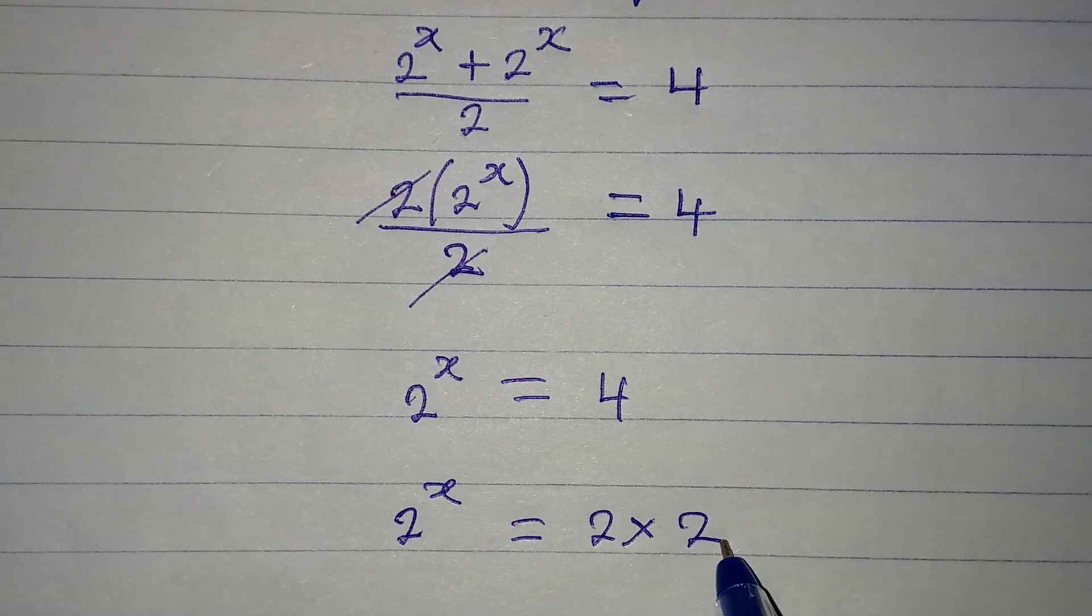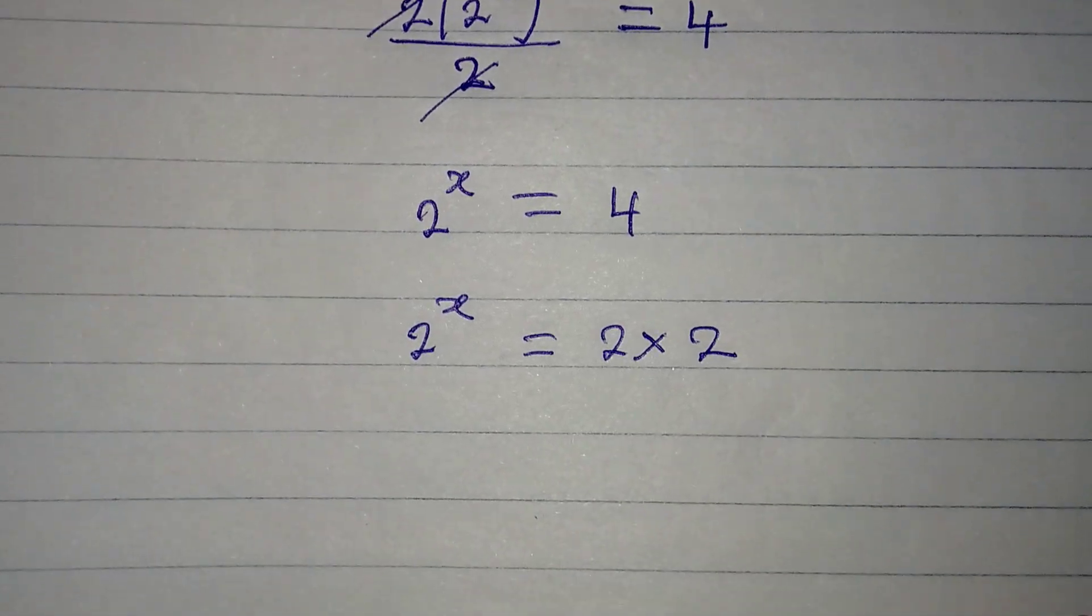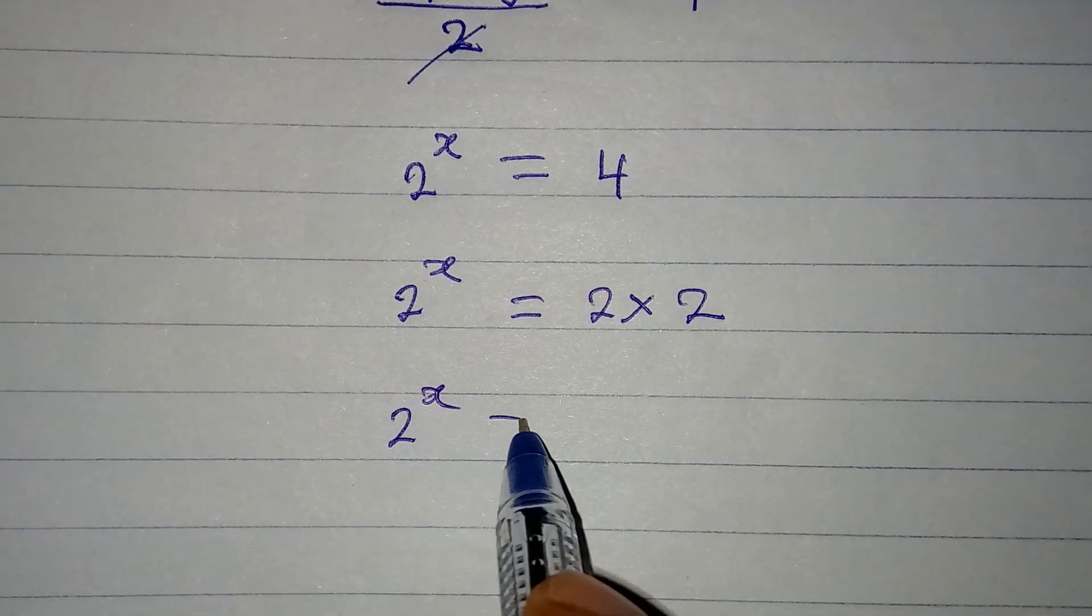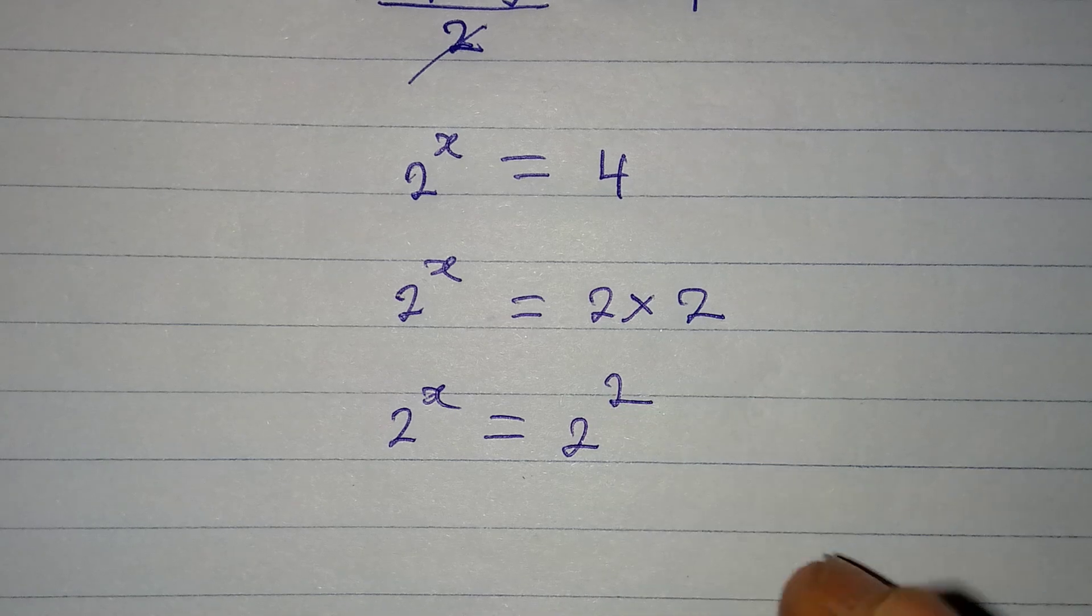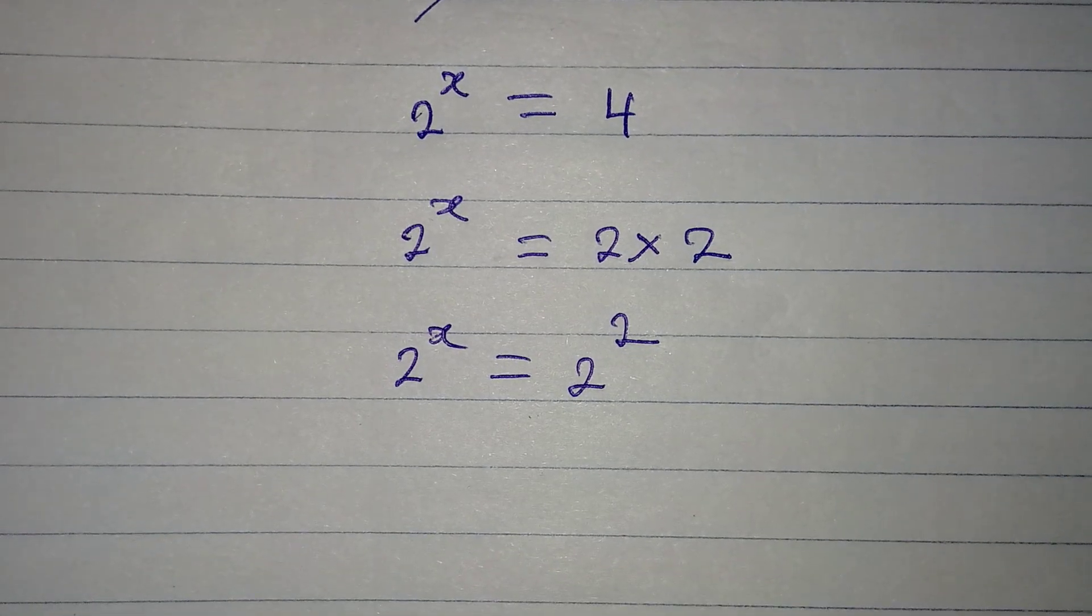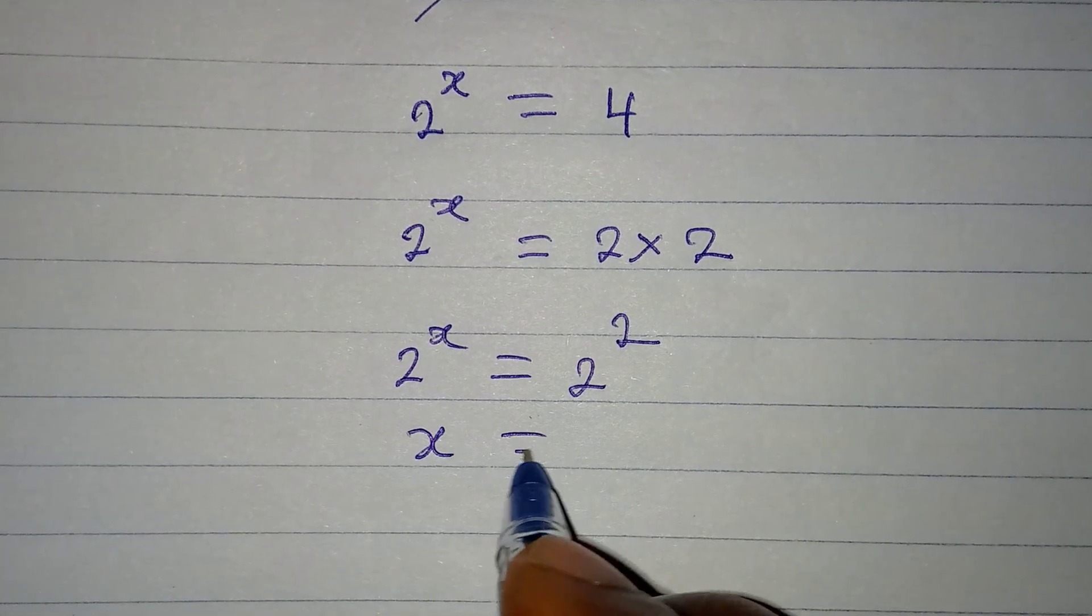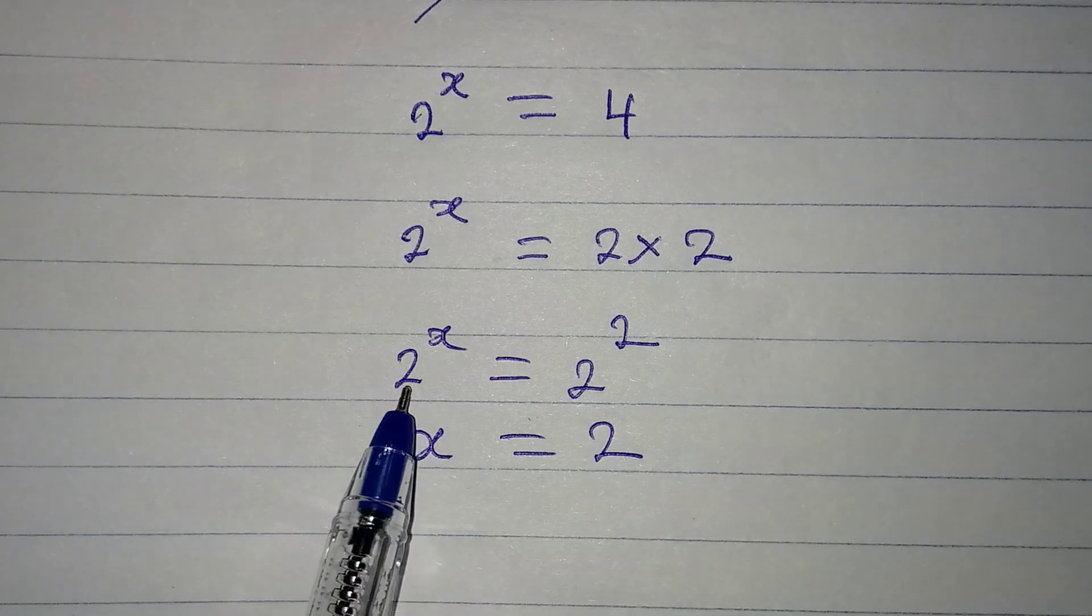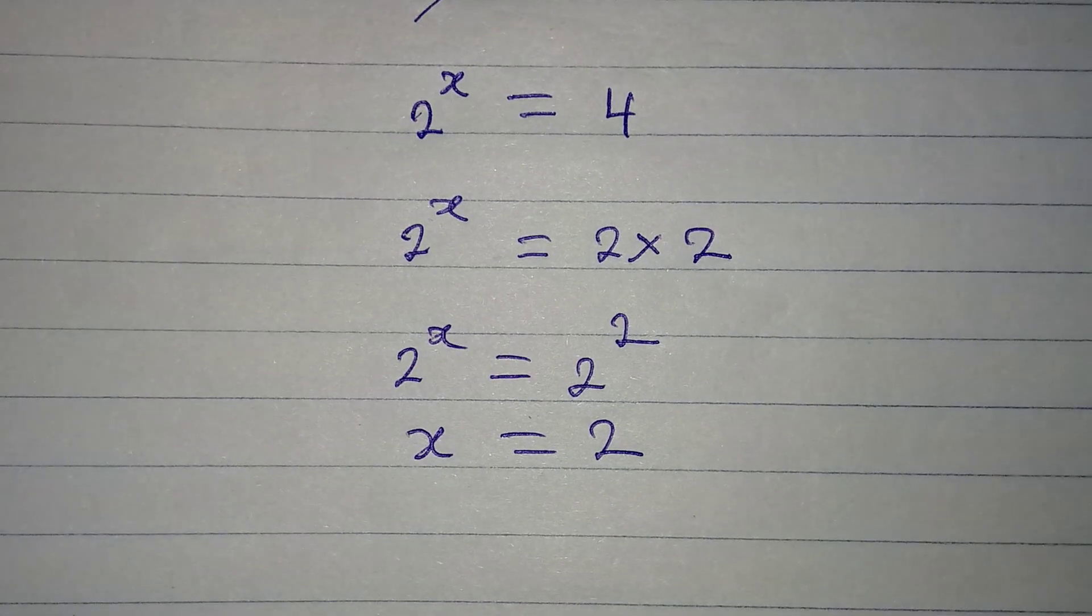2 multiplied by 2 will give us 2^2. Now what do we have? x is equal to 2, because if the bases are the same, you equate the powers. So this is the value of x.